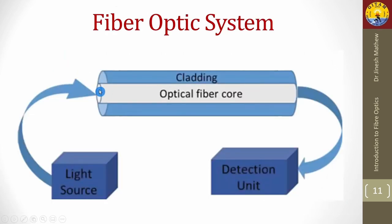The main components of a fiber optic system — whether a communication system or a sensor system — are the light source, optical fiber, and the detection unit, which consists of a photodiode plus signal processing electronics.